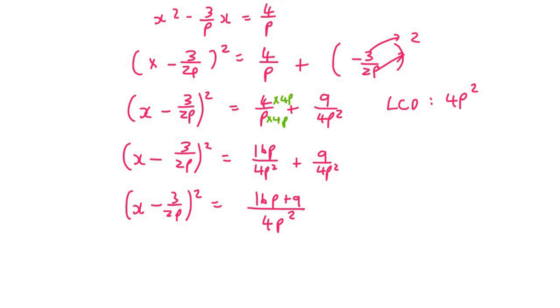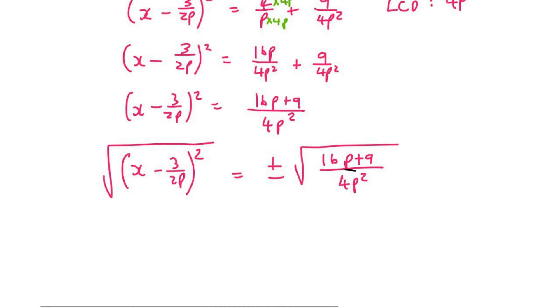At this point you can now take the square root on both sides. So that's going to look like that. And then on the right hand side we say plus minus, and that's going to be 16p plus 9 over 4p squared. Then as in question number 13, the same thing is going to happen here. If you look at this number at the bottom, the square root of that, we know that the square root of 4p squared is simply going to be 2p.